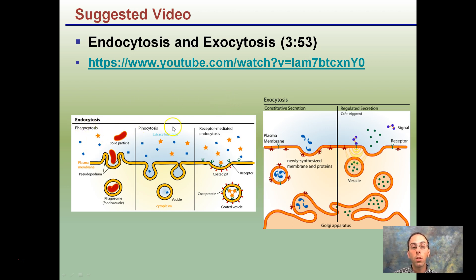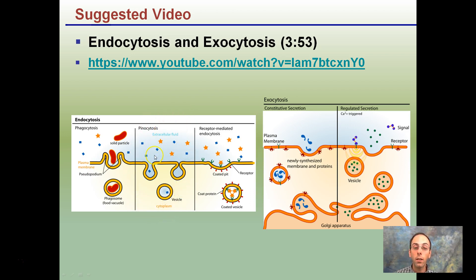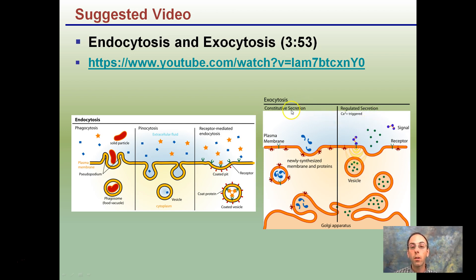Remember, endocytosis has three forms. Phagocytosis is taking in typically food items or, in the case of white blood cells, foreign bacteria. Pinocytosis is grabbing fluid with ions — the cell is really looking for the ions dissolved in it. Receptor-mediated endocytosis involves specific binding sites. And exocytosis is just the opposite — things are budding off. Our Golgi apparatus buds off and leaves the cell. Those could be hormones, signals, or waste products. Exocytosis is exiting; endo is being taken into the cell.